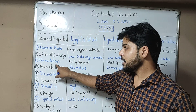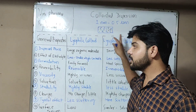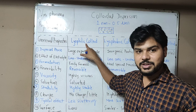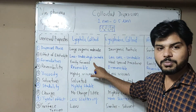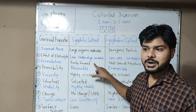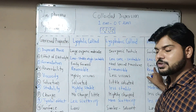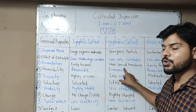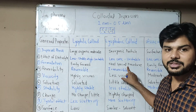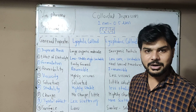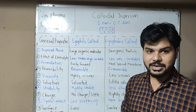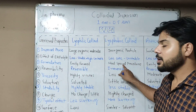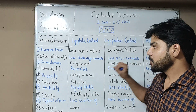If we need to formulate a colloidal system: lyophilic colloids are easily formed with a simple dispersion method, association colloids are also easily formed, but lyophobic colloids require special methods such as electric arc method, condensation method, or other dispersion methods for their preparation.